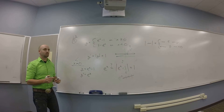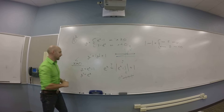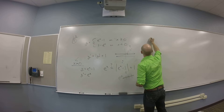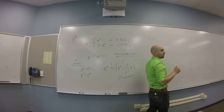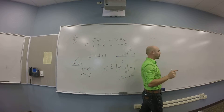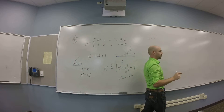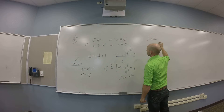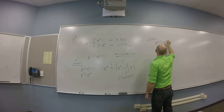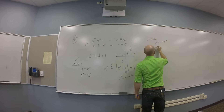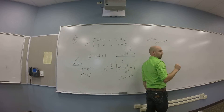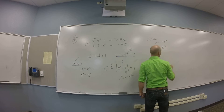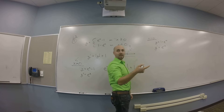Great, we're good on x bigger than zero. Now we need to play the same game for x smaller than zero. If x is smaller than zero, then y is 1 minus e to the minus x. So I need y prime, which is negative e to the negative x times negative 1, giving e to the negative x.